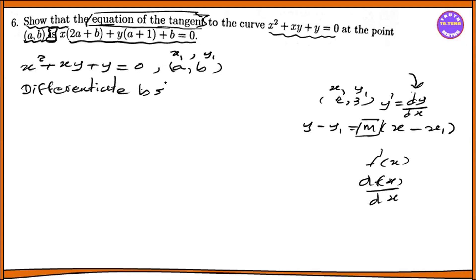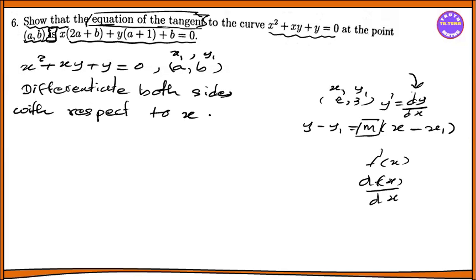Differentiate both sides with respect to x. The first term: x squared differentiates to 2x.